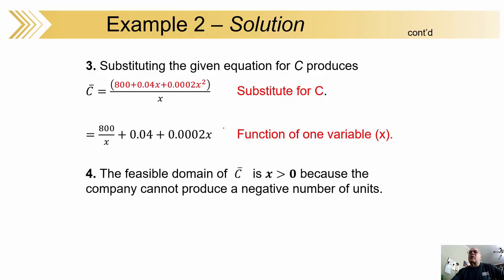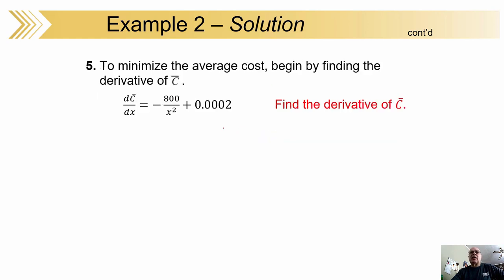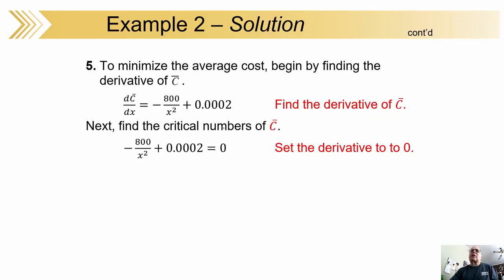Feasible domain is x greater than zero, because you can't produce a negative number of units, obviously. We'll find the derivative. And that was pretty simple. Remember that middle term was a constant, so the derivative of that one was zero. So we have two terms left. There's our derivative of the average cost function. To get the critical numbers, set that equal to zero.